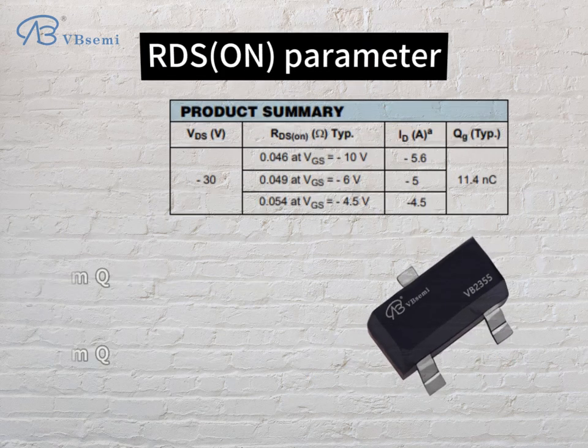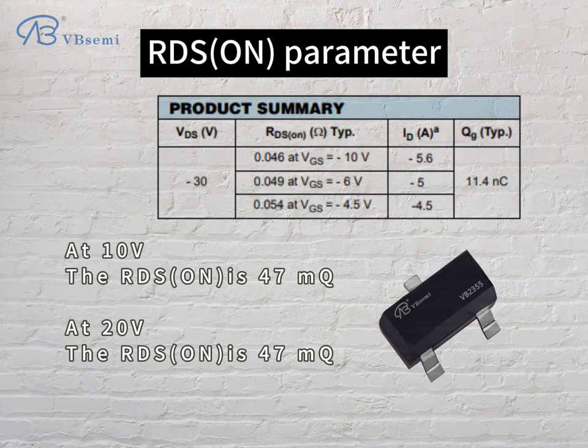RDS(on) parameter: at VGS=10V, the RDS(on) is 47mΩ; at VGS=20V, the RDS(on) is also 47mΩ.